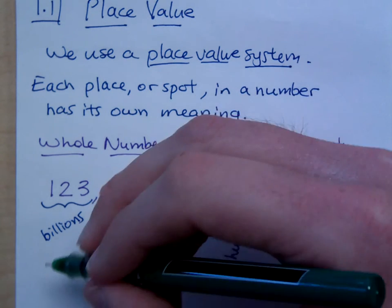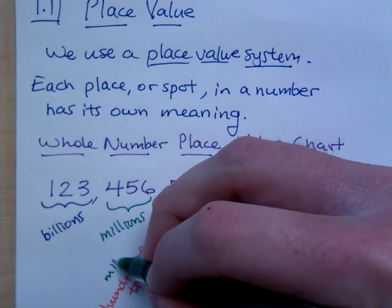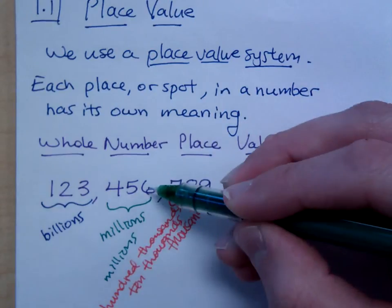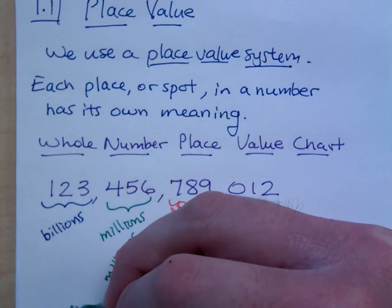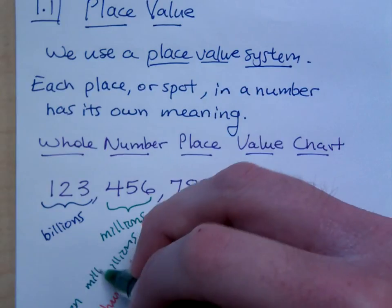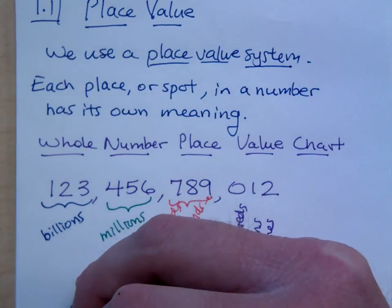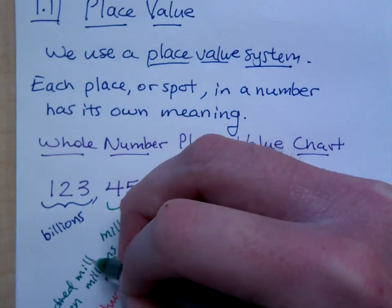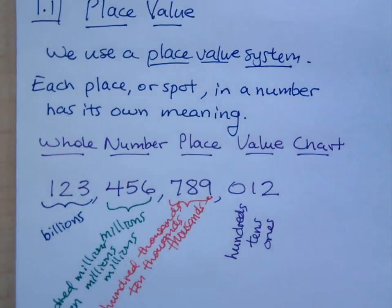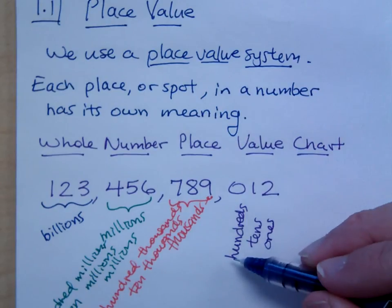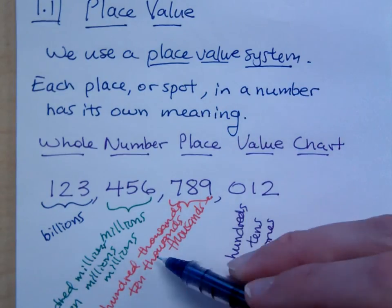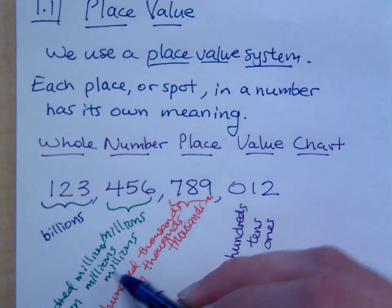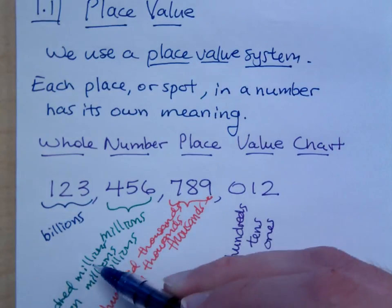So then you have millions, right? Millions is where the sixth spot is, and you go on to ten millions, and then a hundred millions. So you see this pattern start to emerge. You have ones, tens, hundreds. One thousands, ten thousands, hundred thousands. One millions, ten millions, hundred millions.